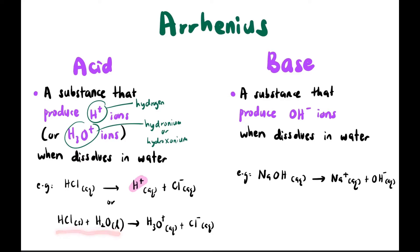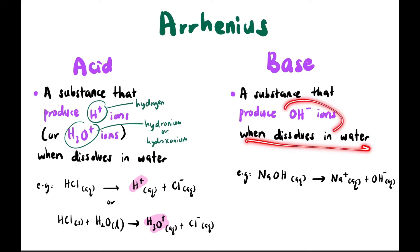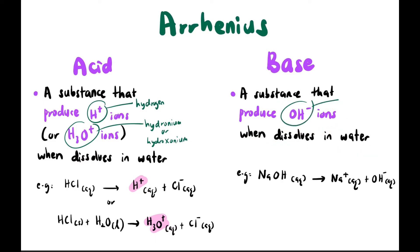One way to write the equation is to add H₂O, so HCl + H₂O produces H₃O⁺. For a base according to Arrhenius, it is a substance that produces OH⁻ (hydroxide ion) when dissolved in water. For example, NaOH in aqueous solution dissociates into Na⁺ and OH⁻.